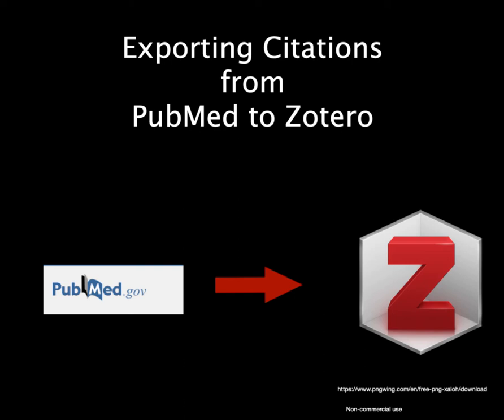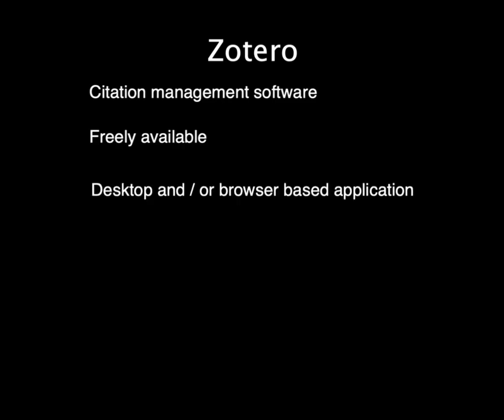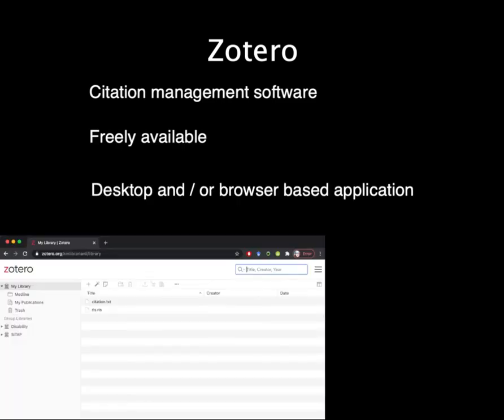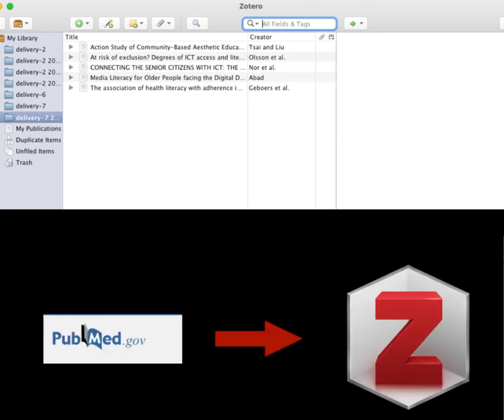Exporting from PubMed to Zotero. Zotero is a citation management software that is freely available on the web and can be used either as an in-browser or a desktop application. This video utilizes the desktop version and demonstrates how to export citations from PubMed to Zotero.